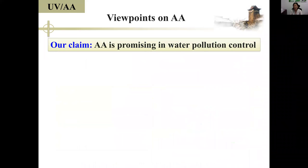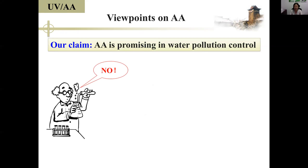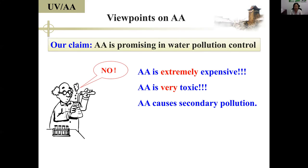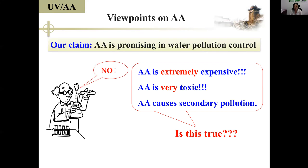Both AA and its degradation products are bio-friendly. Therefore, we thought maybe we can use the UVAA process as a pre-treatment for bio-treatment. Based on the high efficiency of the UVAA process, we put forward our viewpoint: AA is promising in water pollution control. However, our peer reviewers had concerns, including that AA is extremely expensive, very toxic, and might cause secondary pollution.